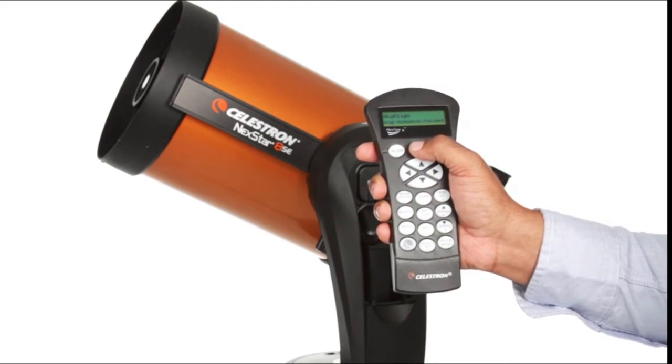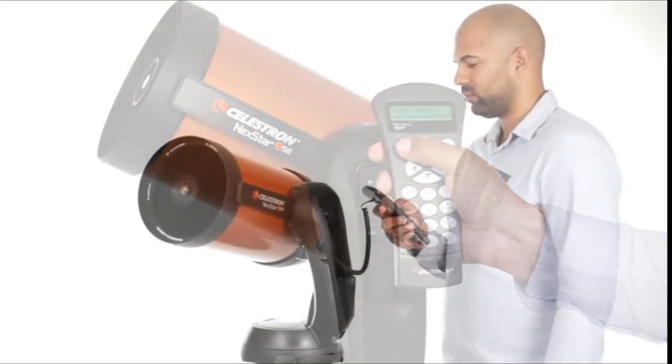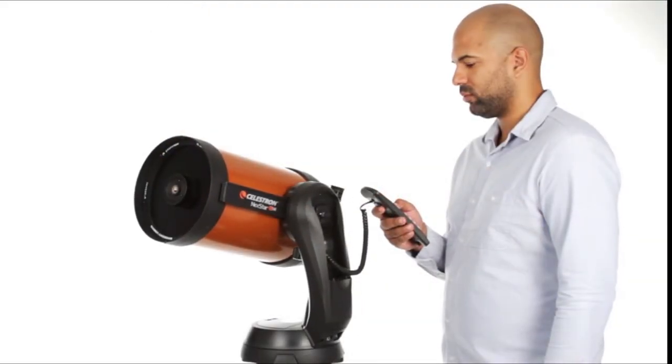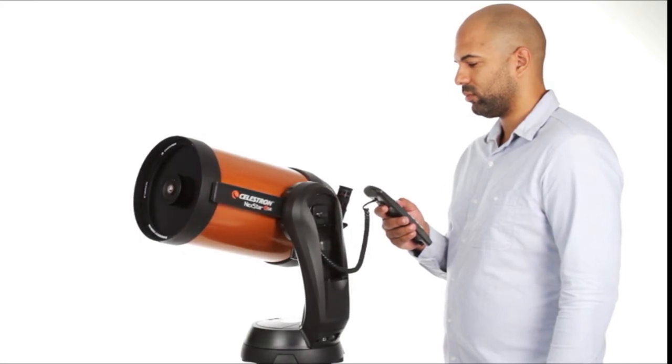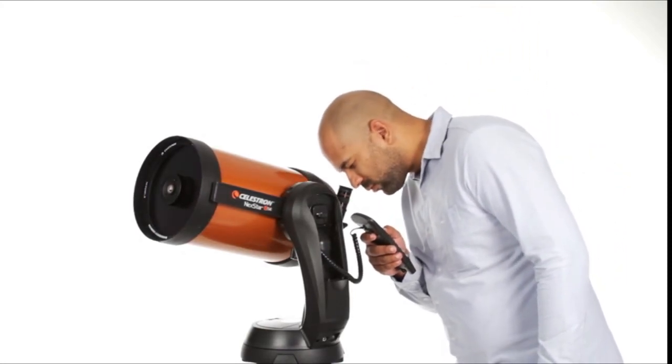Choose from thousands of objects in Nexstar SE's database. Then, the computerized fork arm mount accurately points your telescope, centers your object perfectly in the eyepiece, and tracks it as it moves across the sky.